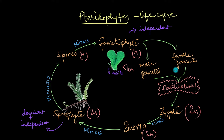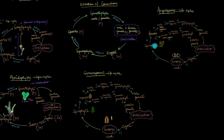This process basically remains the same in gymnosperms and angiosperms too, except those plants also produce seeds. In seed plants, the sporophyte continues to remain dominant and independent — meaning the huge pine tree that you see, or that plant with the pretty flowers, is the diploid sporophyte.